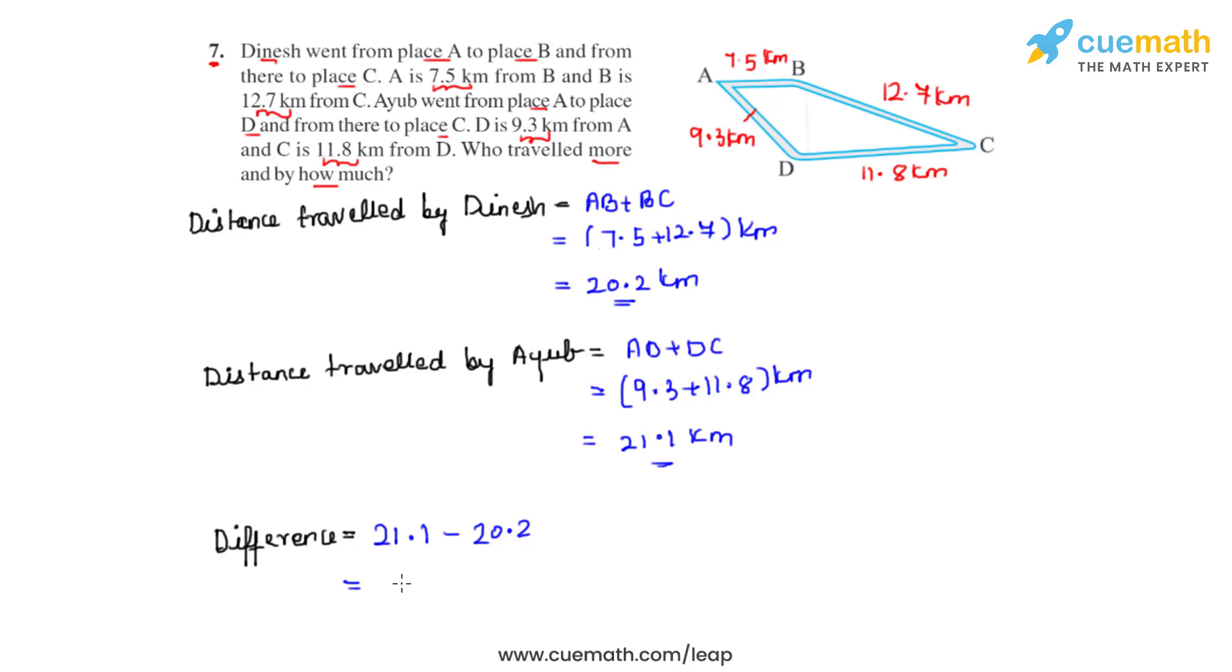Subtracting these two will give us the difference as 0.9 kilometers. That is Ayoub traveled 0.9 kilometers more than Dinesh. And this is how we solve question number 7.